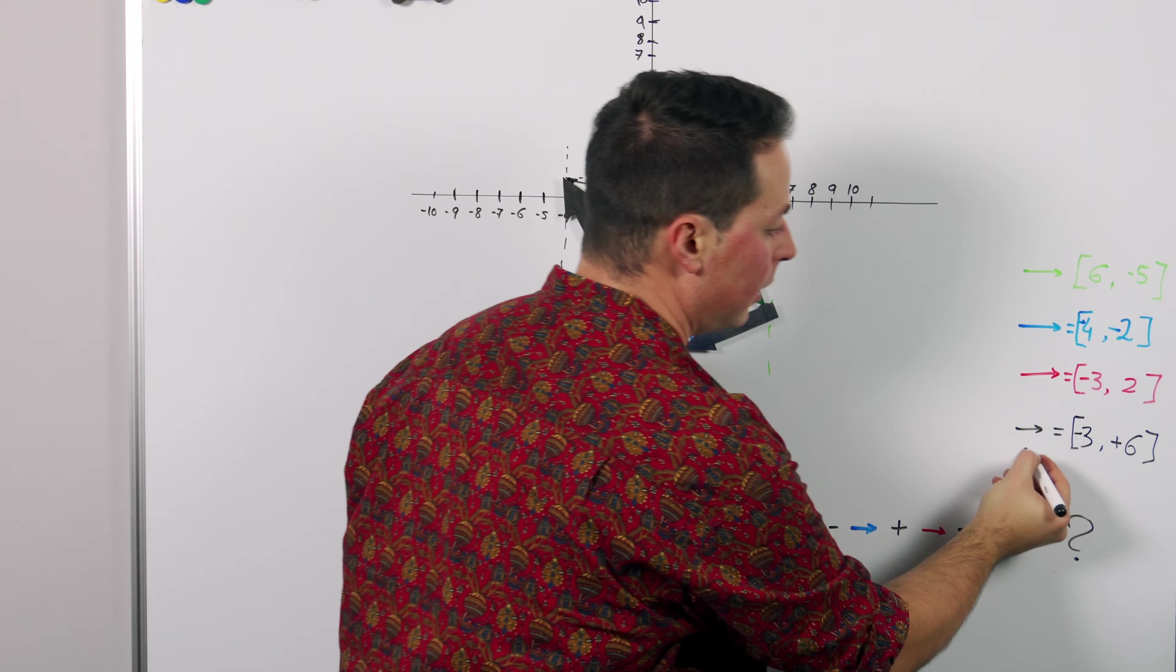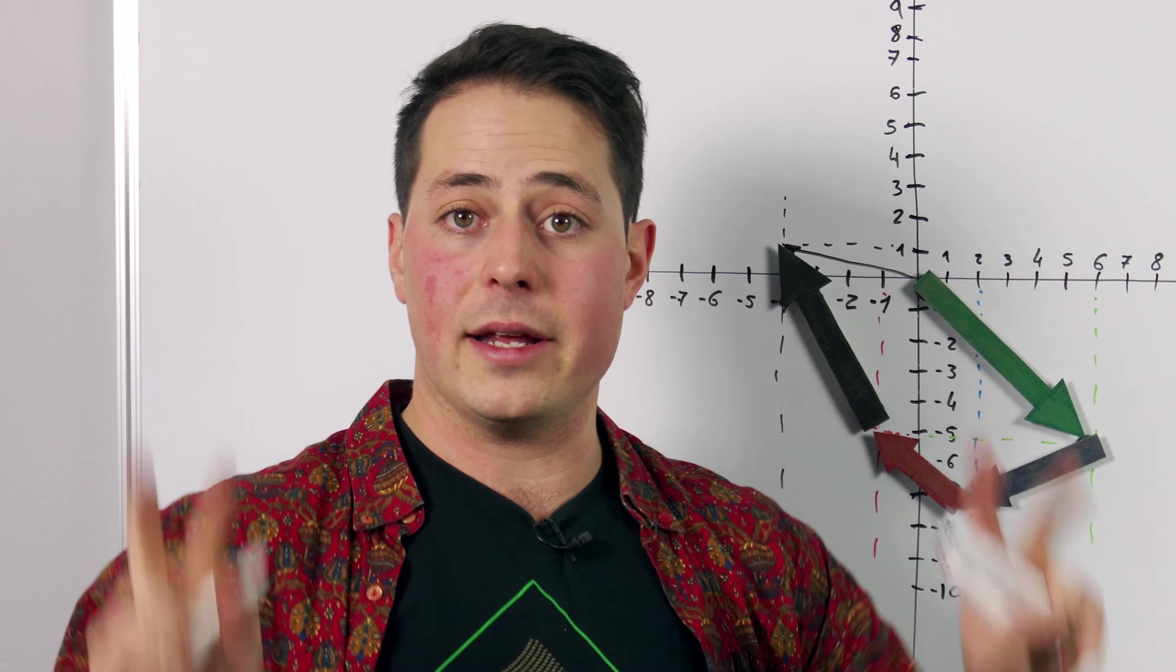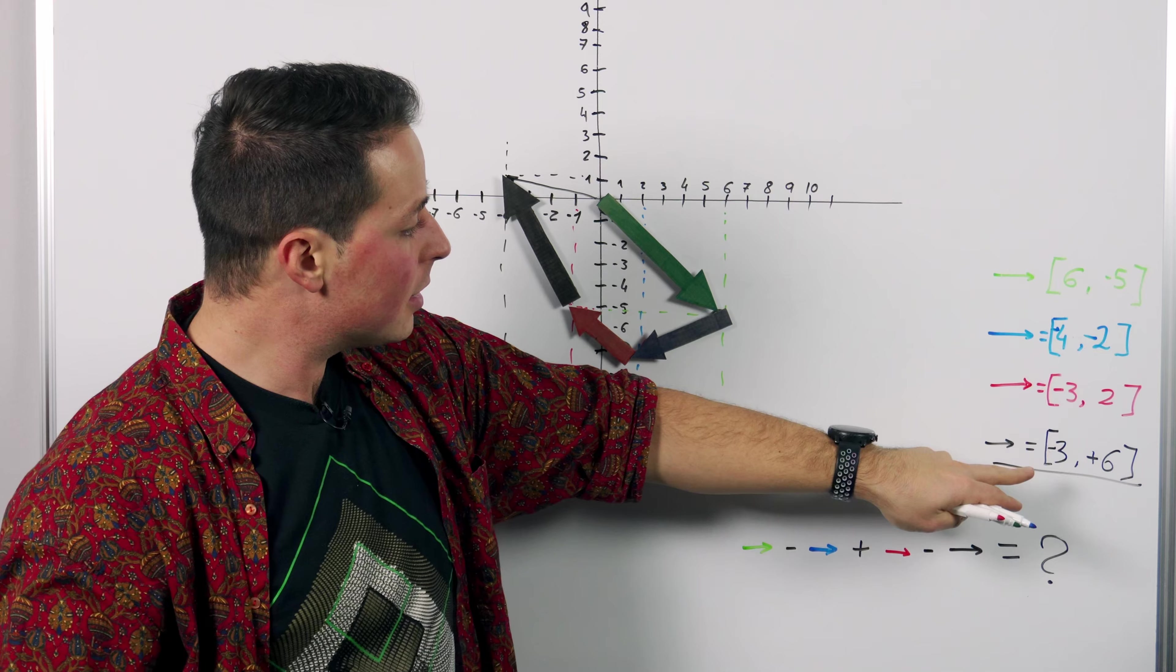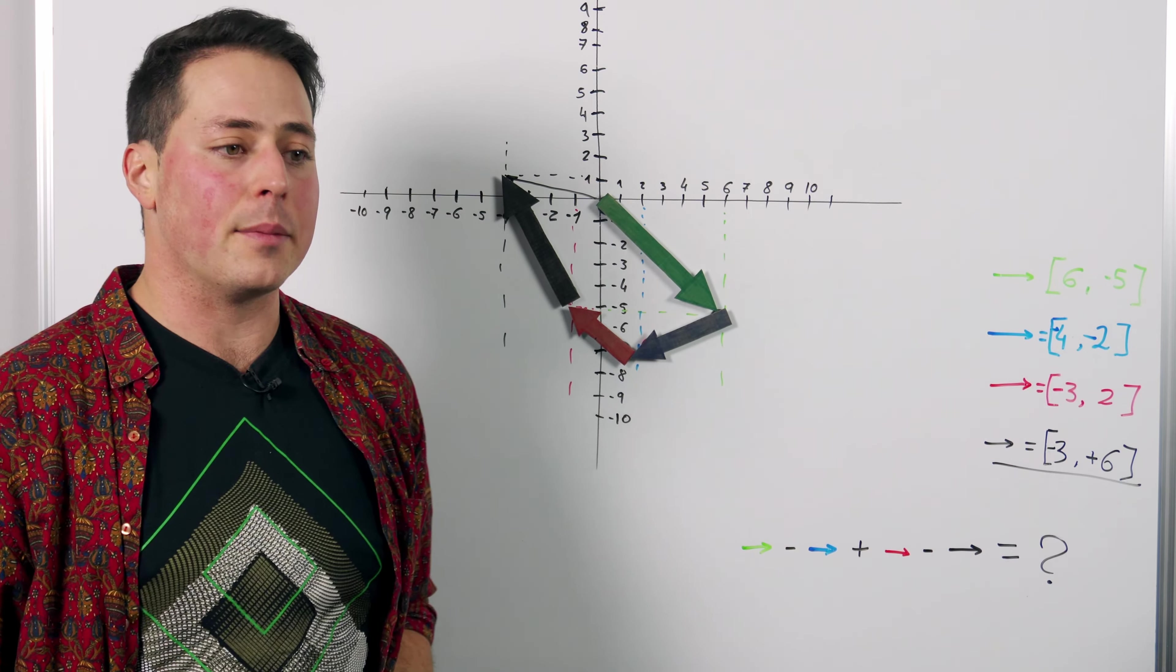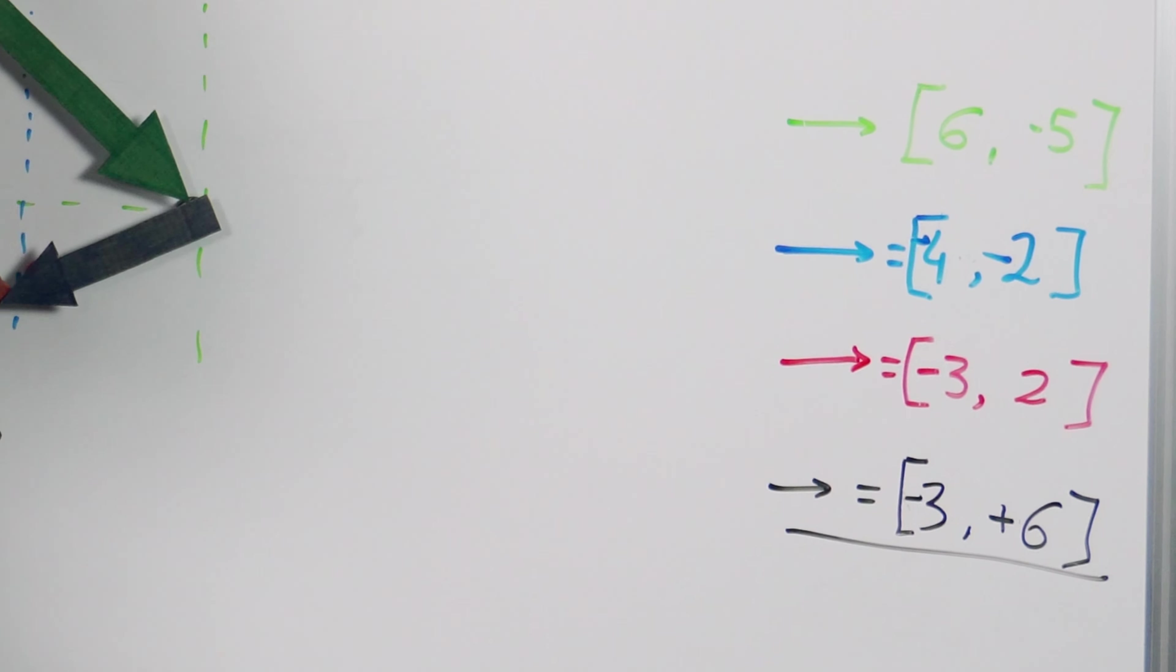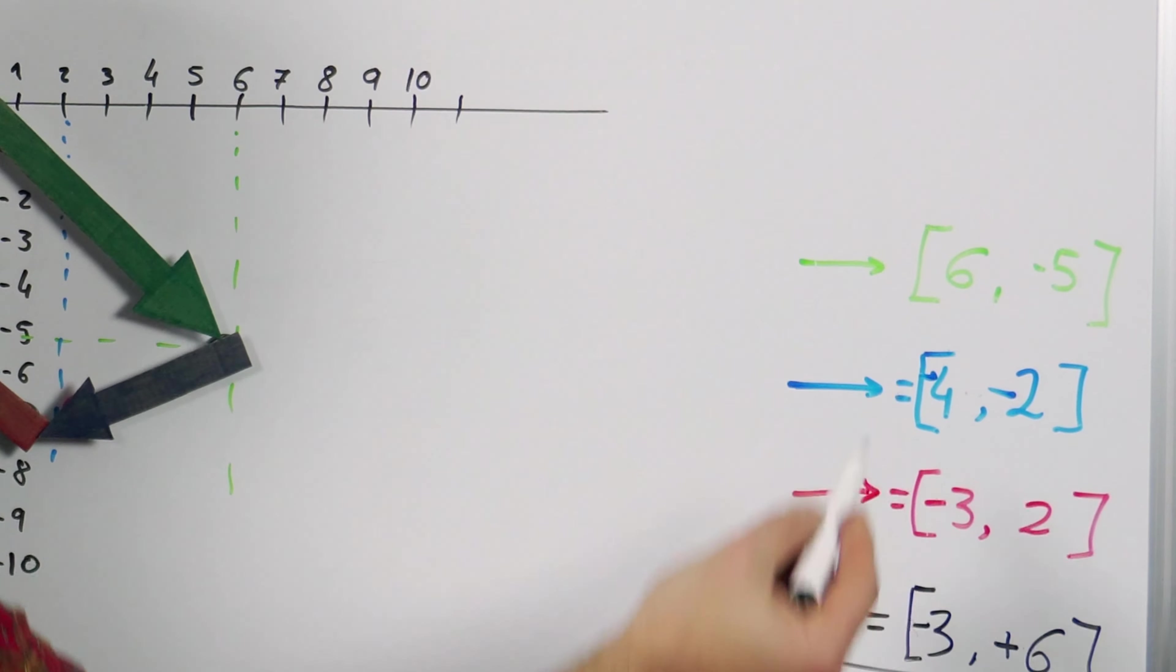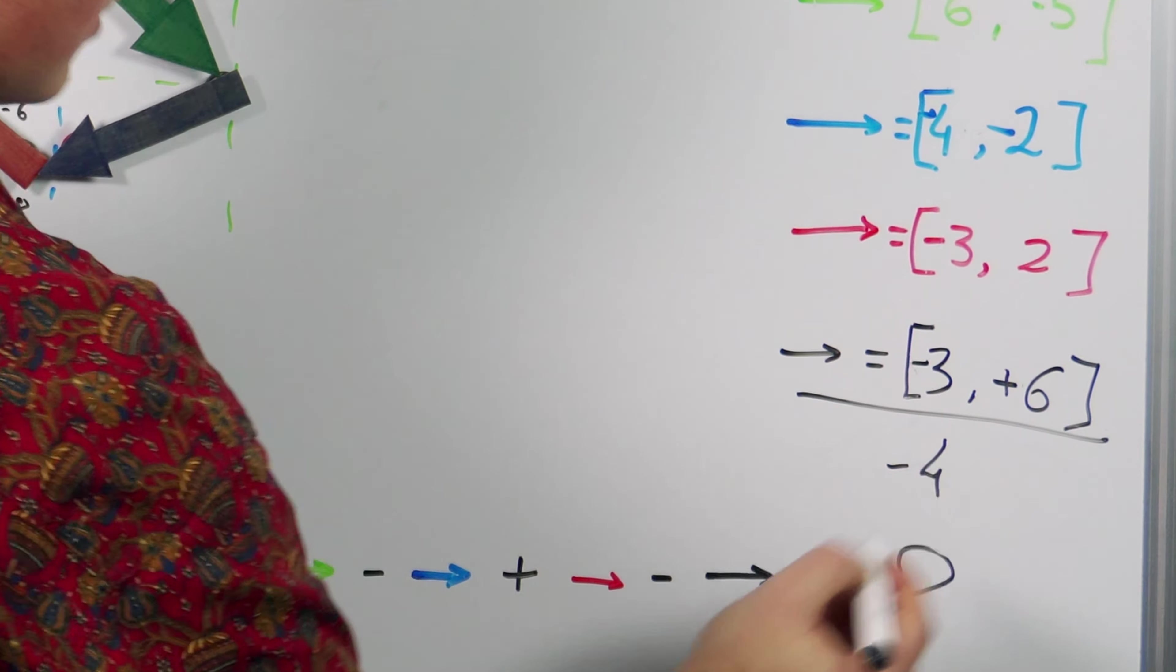We can do this also mathematically just by looking at the components but since we have already flipped the components we can treat this as a sum. So let's do it in a way that it makes sense here. Minus 3 and minus 3 is minus 6 plus 6 is 0. So we are left off with a minus 4.